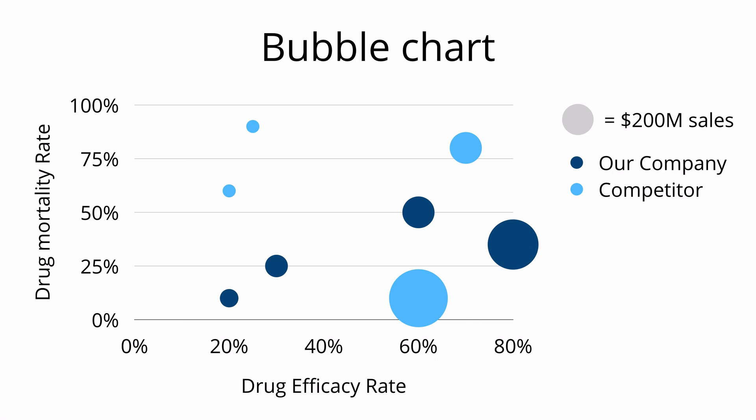The final chart is the bubble chart. Bubble charts use the x-axis, y-axis, the size of the bubble, and even the color of the bubble to show many dimensions of information. Each bubble represents a different drug. The x-axis shows drug efficacy, the y-axis shows drug mortality rate, and the size of the bubbles shows sales in dollars. The color indicates whether the drug belongs to our company or a competitor. You typically want to identify the most favorable quadrant — here, drugs with high efficacy and low mortality are best. Our company has two drugs in the bottom-right quadrant, while the competitor has one, but the competitor's drug has the highest sales due to its very low mortality rate and very high efficacy.